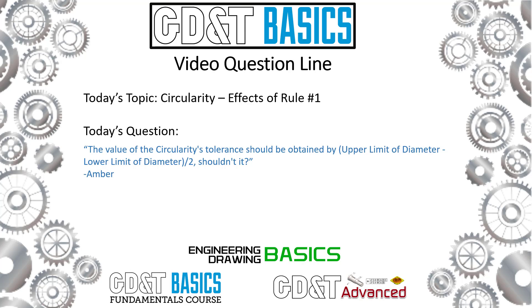Today's topic is circularity, the effects of rule number one. Today's question is: the value of circularity's tolerance should be obtained by upper limit of diameter minus lower limit of diameter divided by two, shouldn't it?